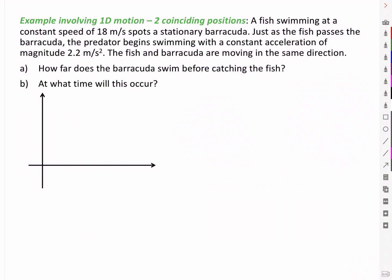A fish is swimming at a constant speed of 18 meters per second and spots a stationary barracuda. Just as the fish passes the barracuda, the predator begins swimming with a constant acceleration of magnitude 2.2 meters per second squared. The fish and barracuda are moving in the same direction. How far does the barracuda swim before catching the fish and at what time will this occur?